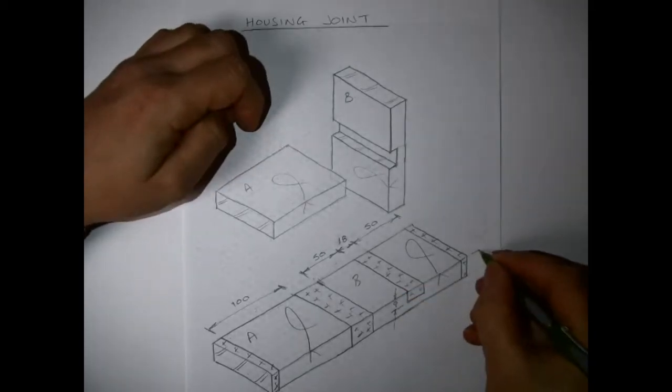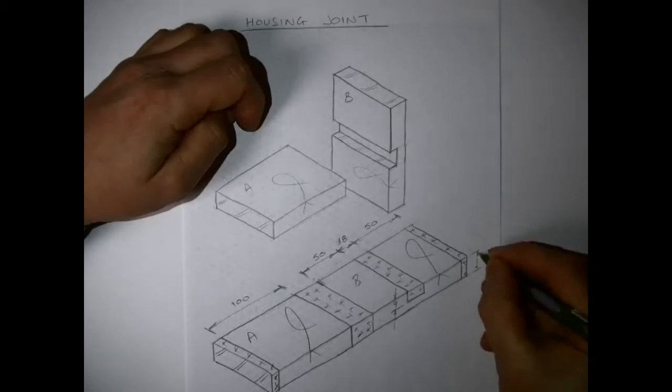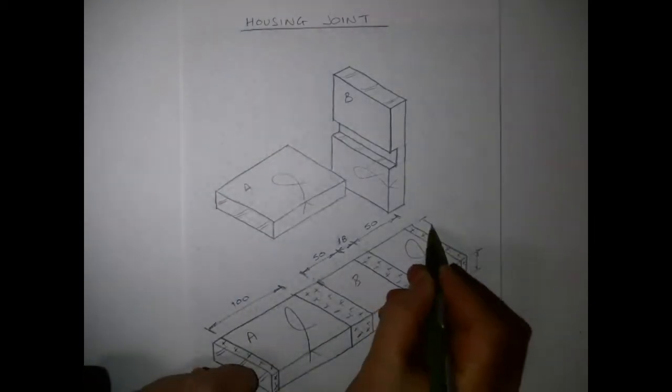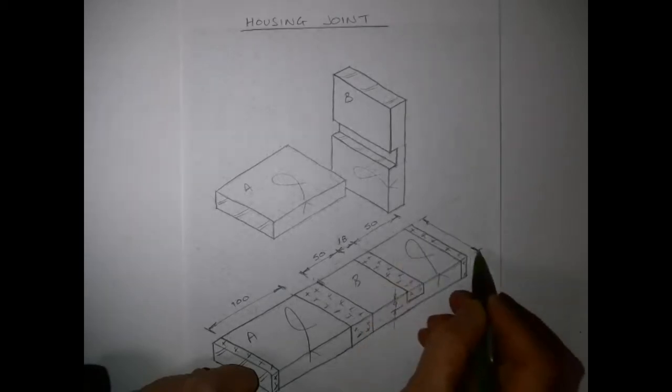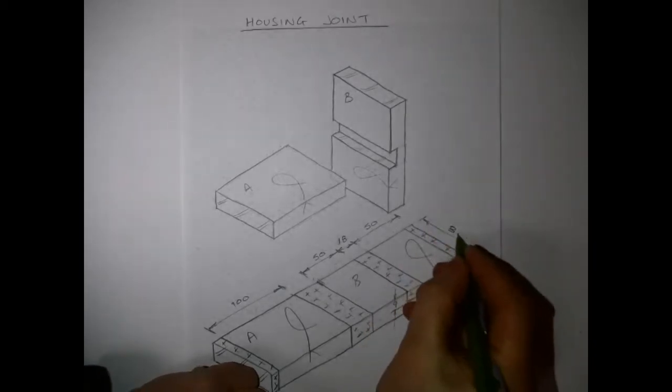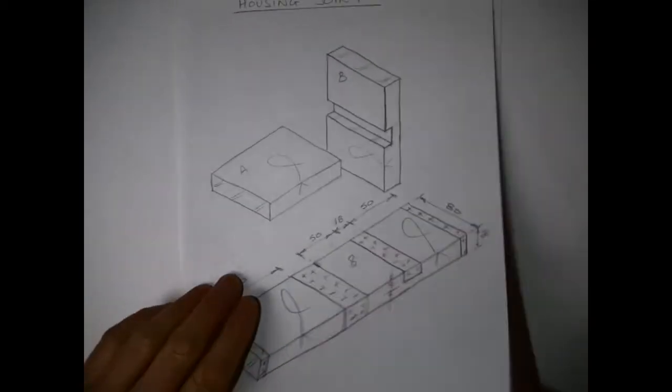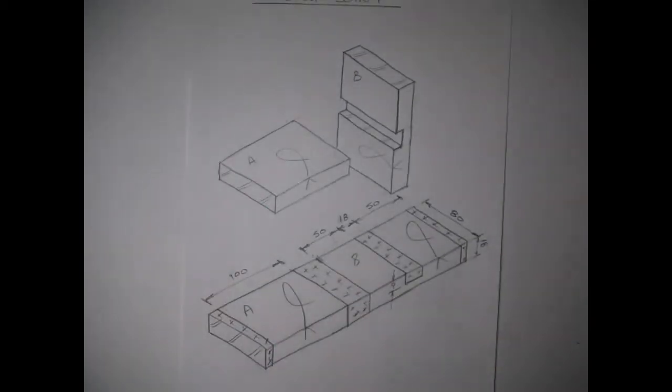And nine for half the depth on piece B. We can put the overall stock size out on the end there, irrespective of whether it's 20 or 18, and it still goes to halfway.